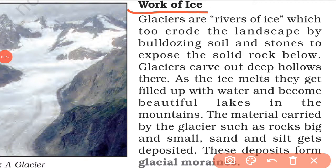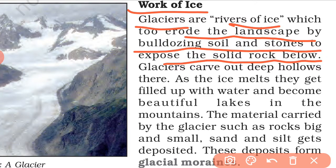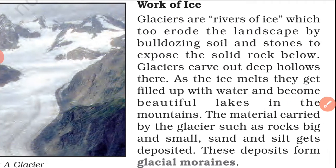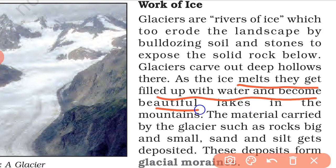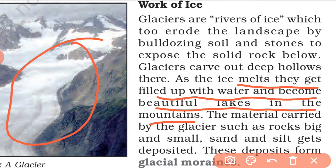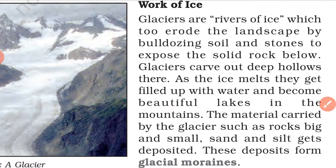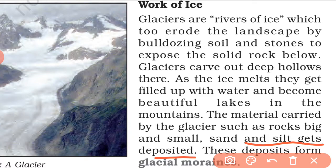Work of ice: Glaciers are rivers of ice which erode the landscape by bulldozing soil and stones to expose solid rock. Glaciers carve out deep hollows; as the ice melts, they get filled up with water and become beautiful mountain lakes. The material carried by the glacier — rocks, big and small, sand and silt — gets deposited and forms glacial moraines.